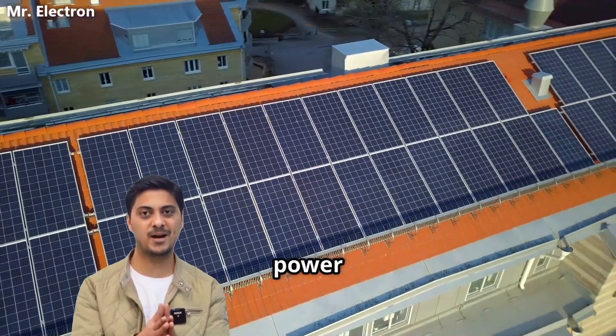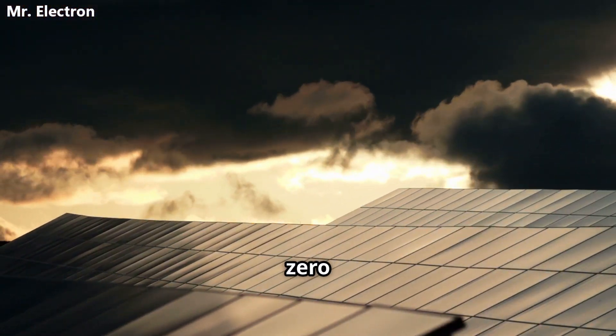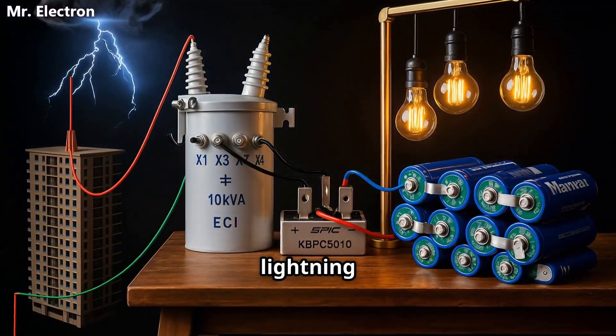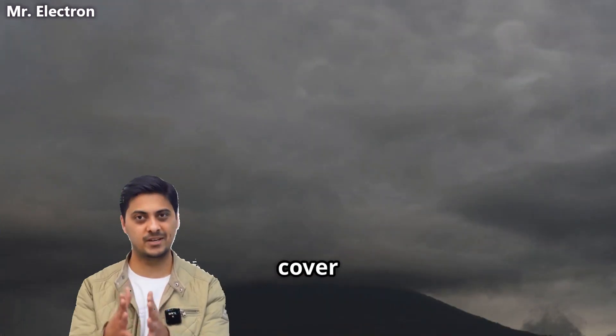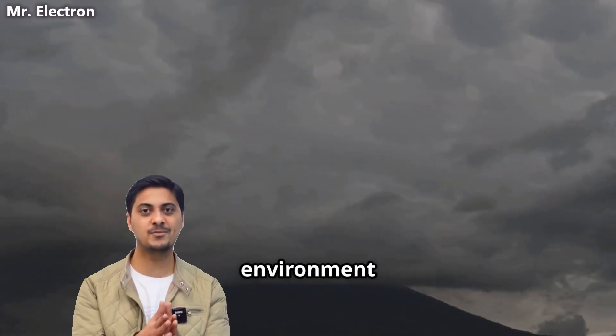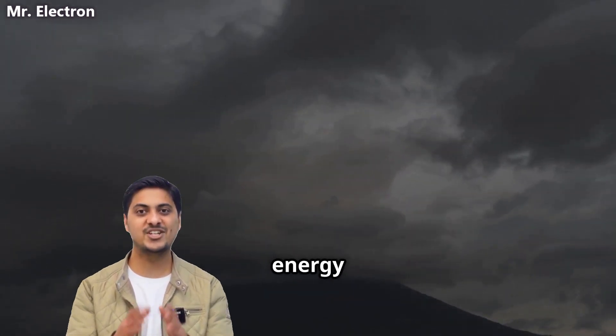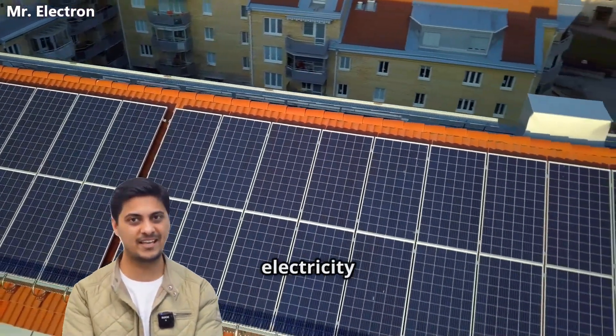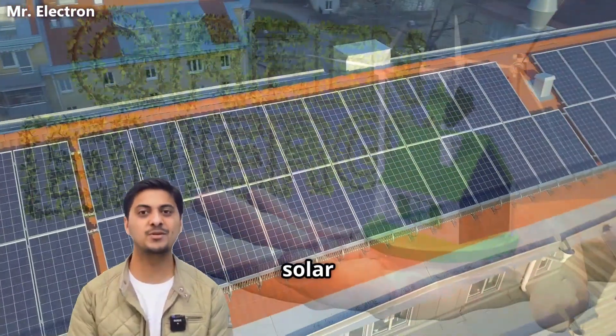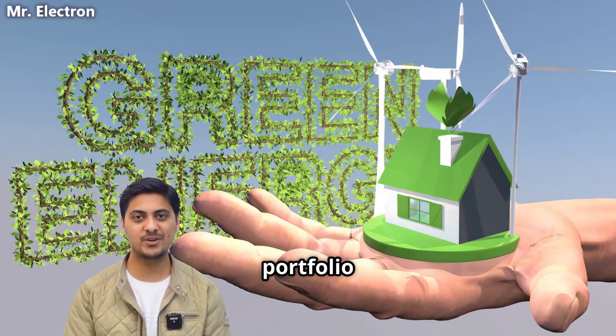While solar panels struggle during cloudy weather and produce zero energy during rainstorms, lightning harvesting systems thrive in exactly these conditions. Heavy cloud cover and thunderstorms create the ideal environment for lightning generation, turning the weather patterns that hurt solar production into peak energy harvesting opportunities. This means buildings can generate substantial electricity precisely when solar panels are least effective.